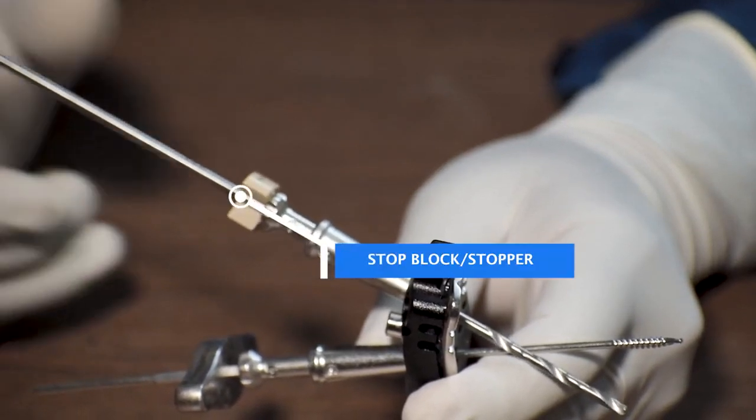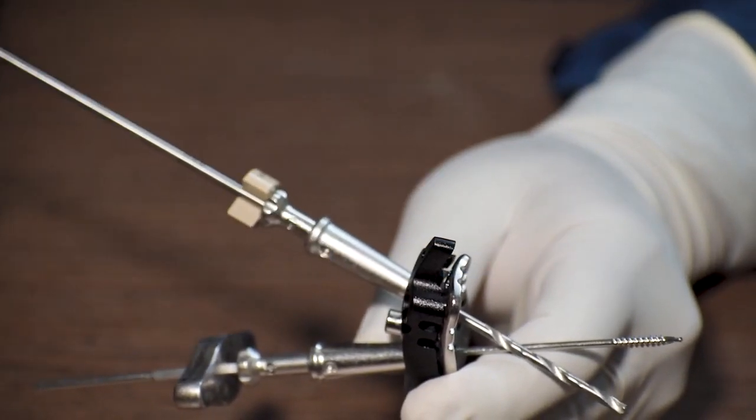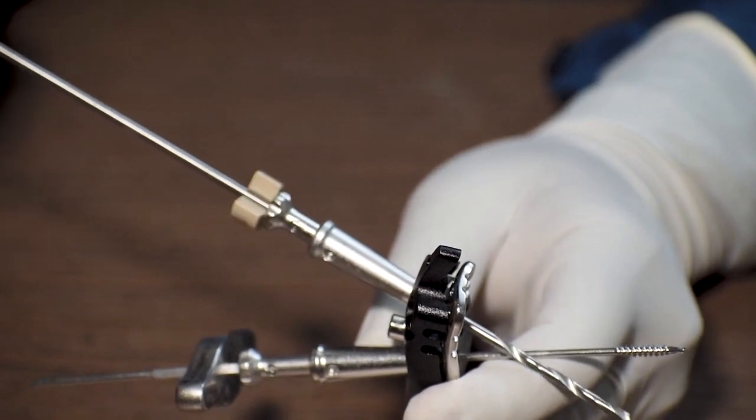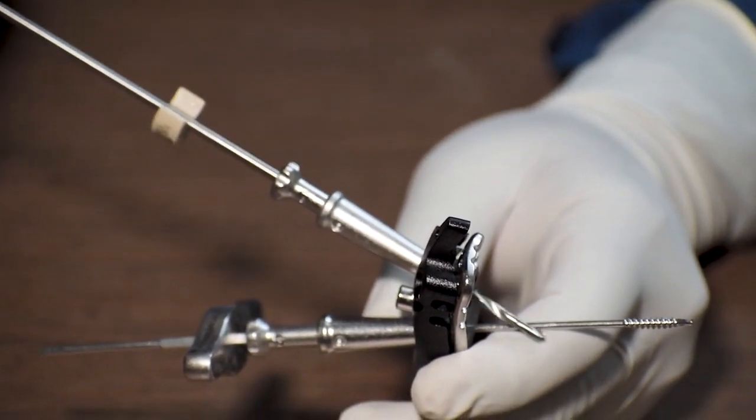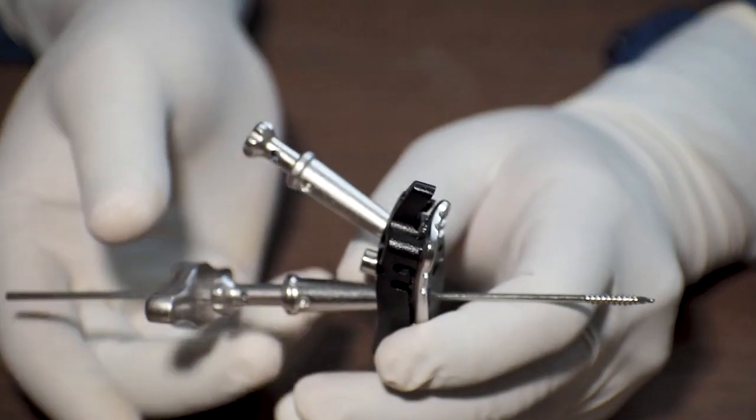This is called a stop block or a stopper. We will drill till it touches the drill sleeve, and then we will actually take the measurement of the required length of the screw that is needed to be fixed.